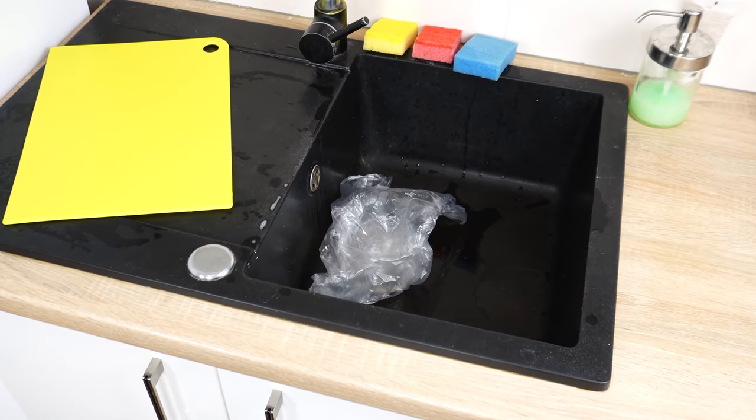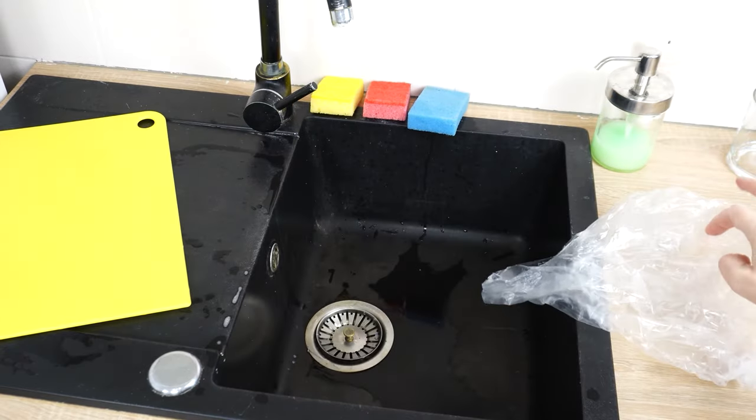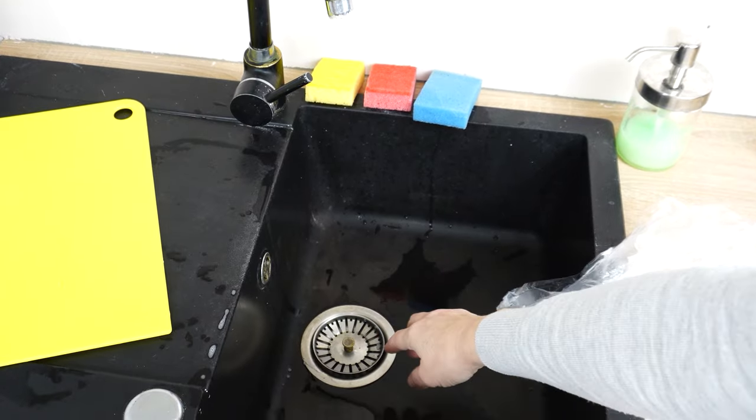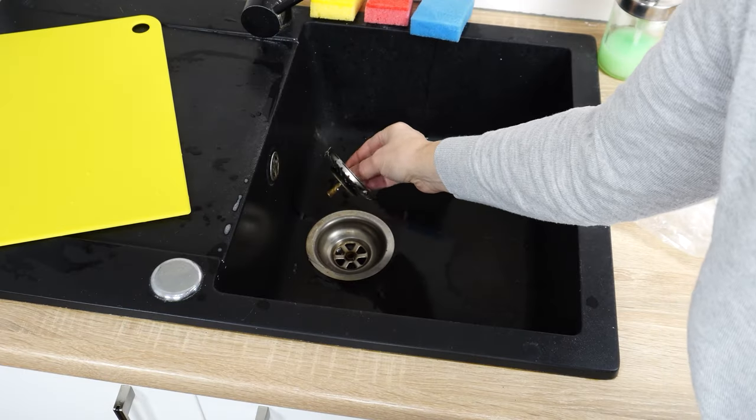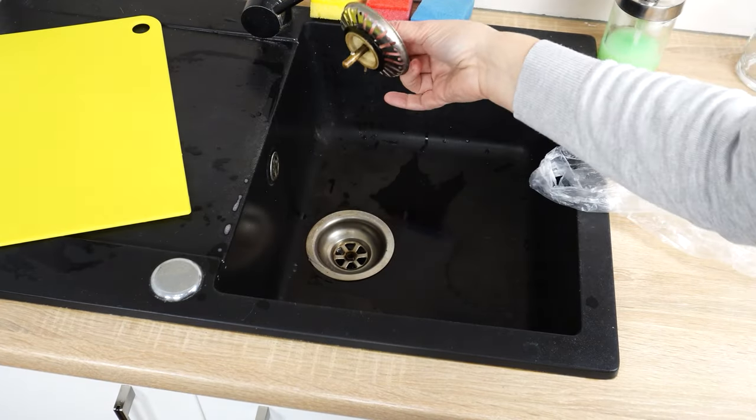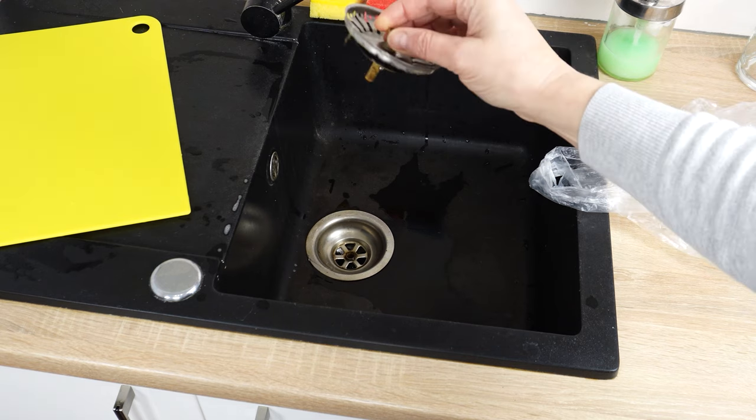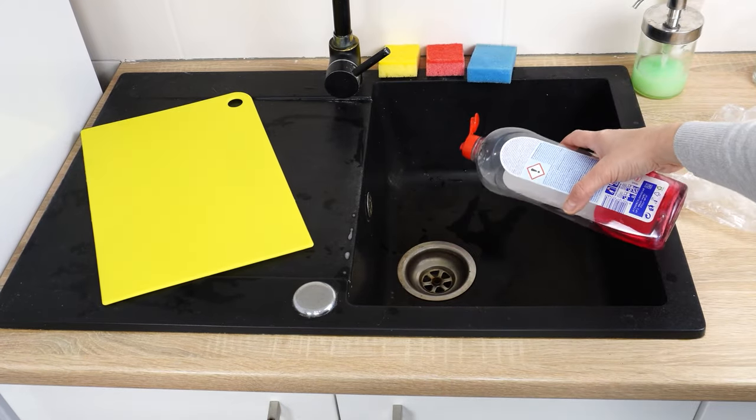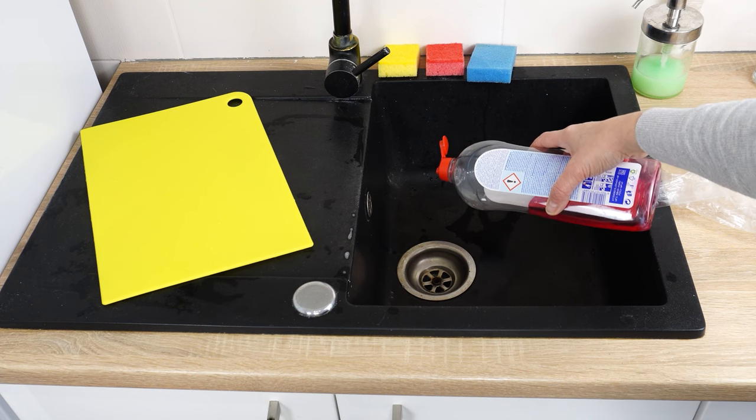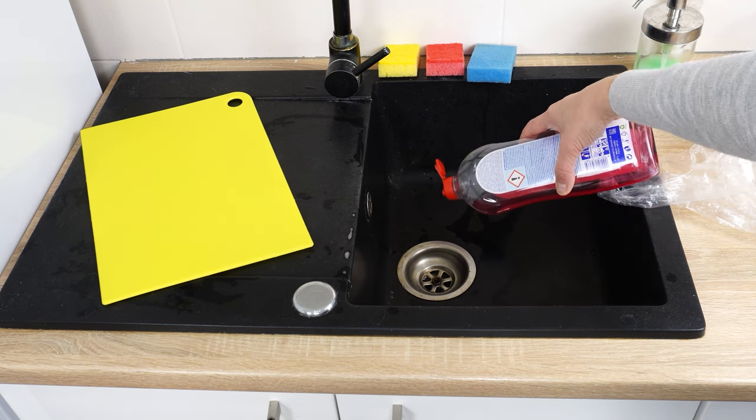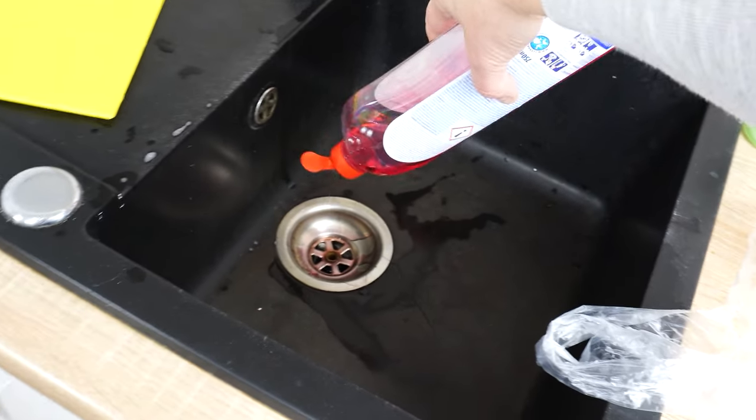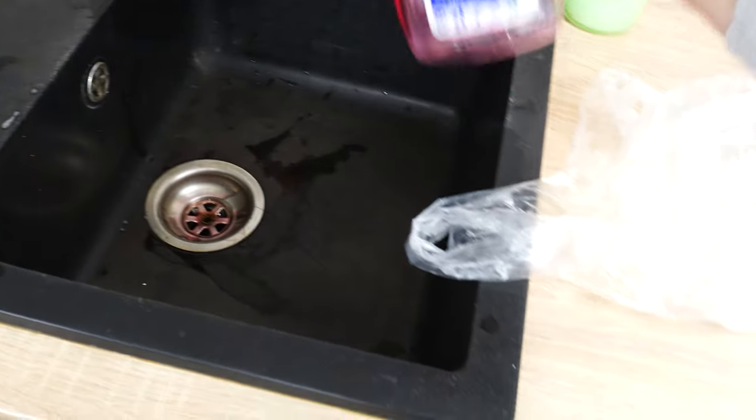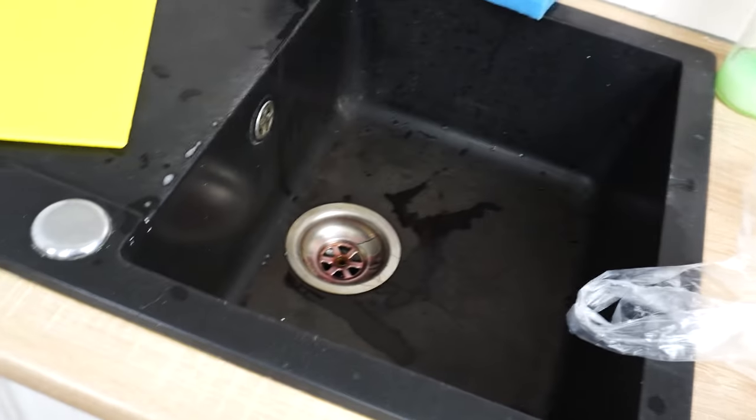If an unpleasant odor emanates from the sink and you hear gurgling in the pipes, apply this method as soon as possible. Remove the strainer from the sink. First, pour some dish soap. The soap removes grease that accumulates in the drain. There's always a lot of it in the kitchen sink. If you're using this method for the first time, pour quite a bit. There's definitely a lot of grease stuck to the walls of the pipes.